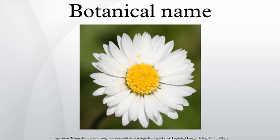A botanical name is a formal scientific name conforming to the International Code of Nomenclature for algae, fungi, and plants. If it concerns a plant cultigen, the additional cultivar and/or group epithets must conform to the International Code of Nomenclature for Cultivated Plants.